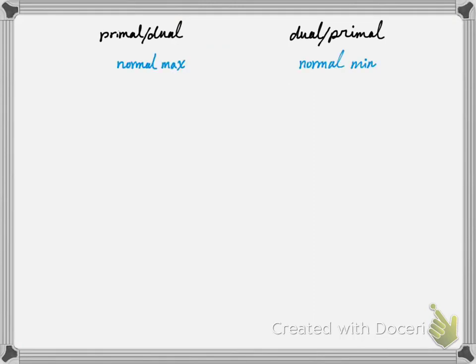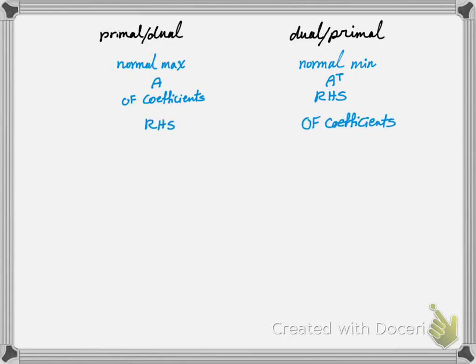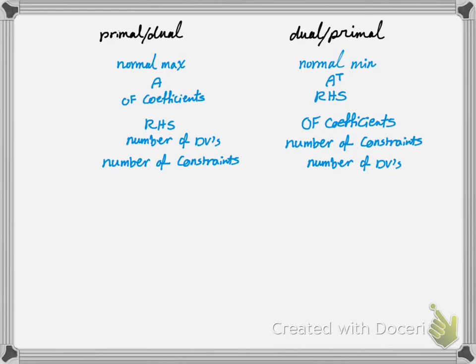So if your primal is a normal max your dual becomes a normal min. If your primal is a normal min your dual becomes a normal max — it's a two-way relationship. If your matrix of technological coefficients is A, the dual technological coefficient matrix is A transpose. Your objective function coefficient in the primal becomes your right hand side in the dual, and the right hand side of primal becomes objective function coefficient of dual. The number of decision variables in the primal becomes the number of constraints in the dual, and the number of constraints in the primal becomes the number of decision variables in the dual. We were not able to see these last two relationships very obviously because we had two decision variables and two constraints, so it was hard to see that relationship. But in the next example we cover, we see that exchange more obviously.